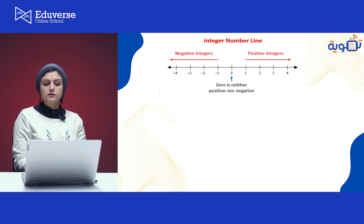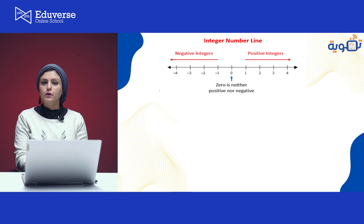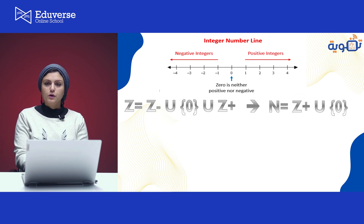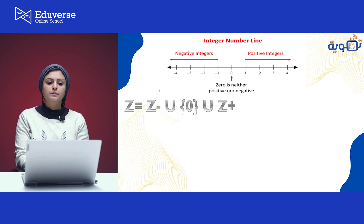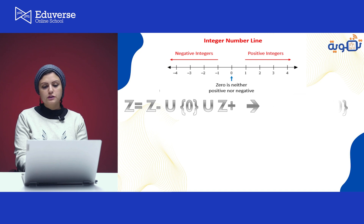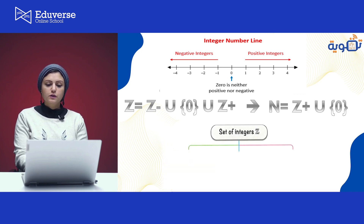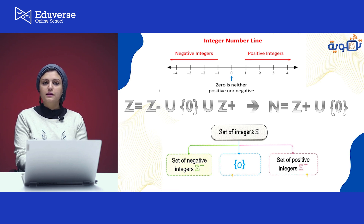Check the number line of the integers. We have zero in the middle, and zero is neither positive nor negative — it's not contained in the positive integers nor the negative integers. So we can say that the set of integers is combined of three sets: the negative integers, union the set containing zero, union the positive integers. And remember, zero union the positive integers is the set of natural numbers. So the set of integers is: negative integers, zero, and positive integers — and never forget that zero union positive integers equals the set of natural numbers.